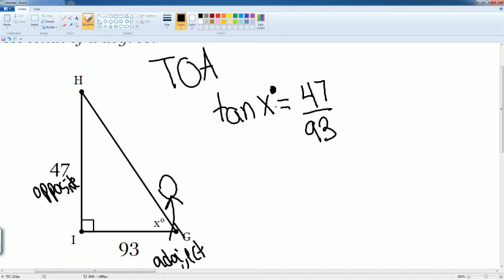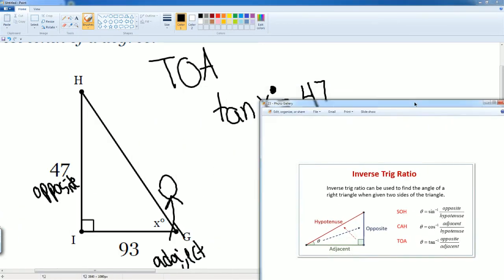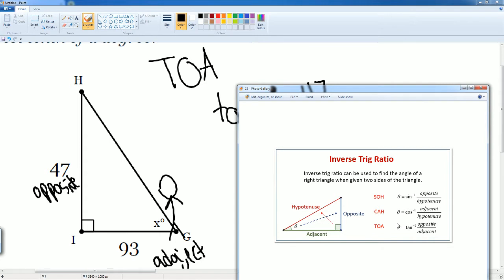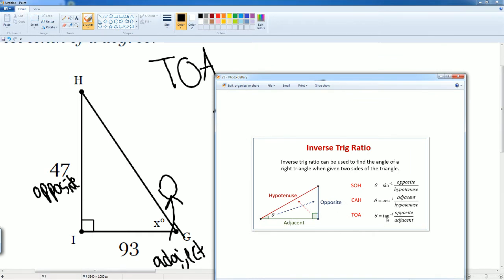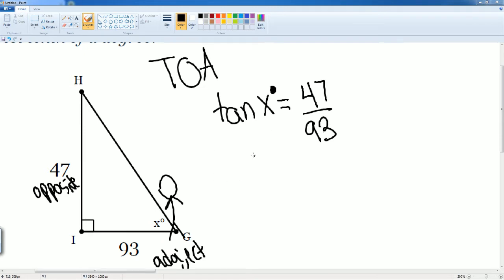Now to solve for that X, you want to use the inverse. So do you see how that is the angle theta? So in this case it's X. So now you use the inverse. So X is going to be the tan inverse of that. All you have to do is now just write X is equal to tan inverse. So it's to the negative one, parentheses 47 divided by 93. That's how you solve for the angle.